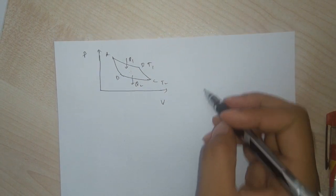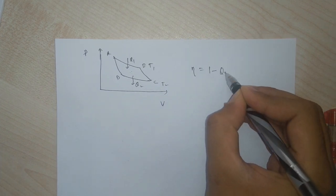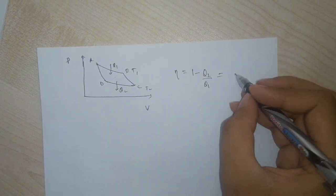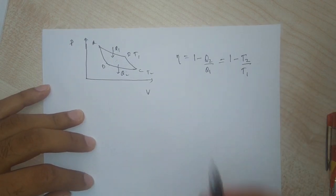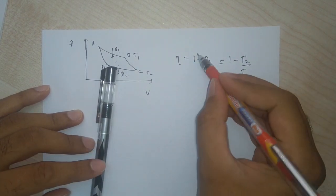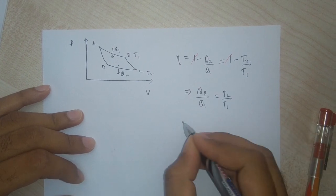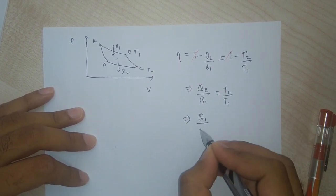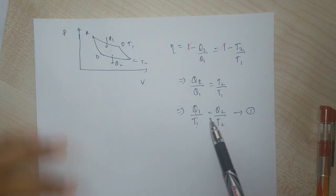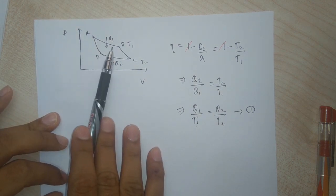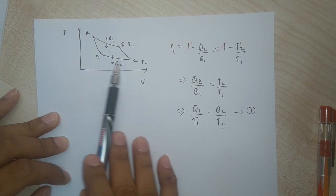Considering the Carnot cycle again: the efficiency is (Q1 minus Q2)/Q1. Since it is reversible, efficiency is also equal to 1 minus T2/T1. Equating these two expressions and rearranging, we get Q2/Q1 equals T2/T1, or equivalently Q1/T1 equals Q2/T2. Call this equation one. This shows that the ratio of heat to temperature in process AB (isothermal expansion) equals the ratio of heat to temperature in process DC (isothermal compression).